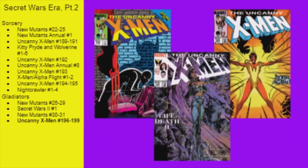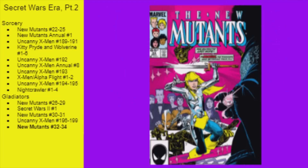Kitty and Rachel then go from New Mutants 31 to X-Men 196. Storm regains her self-worth in 198, and 199 ends with Freedom Force capturing Magneto. The New Mutants meet up with Storm in issues 32, 33, and 34, which also sees them regain Karma as a member.